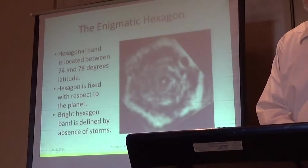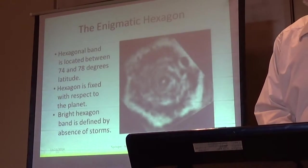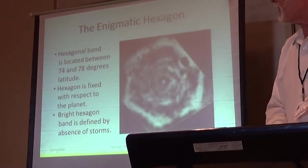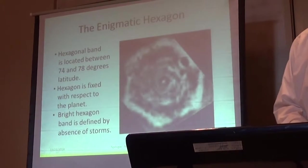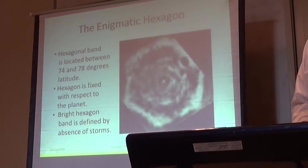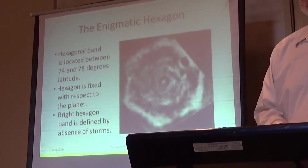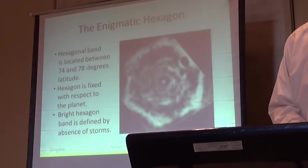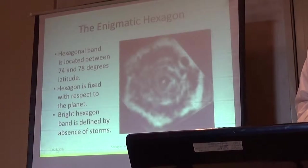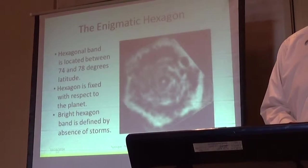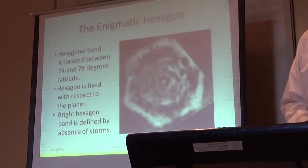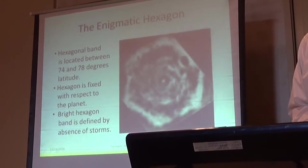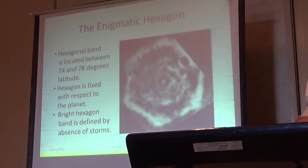So here's another picture of it. This is 5.1 micron radiation. The hexagon is basically a structure about 26,000 kilometers across. It rotates with the planet, and it's between 74 and 78 degrees latitude on the planet. And the bright hexagon is defined by absence of storms.